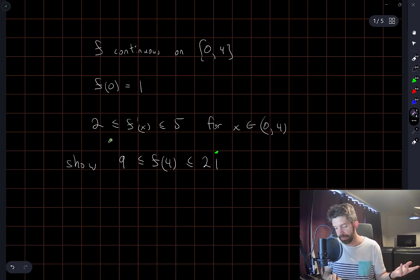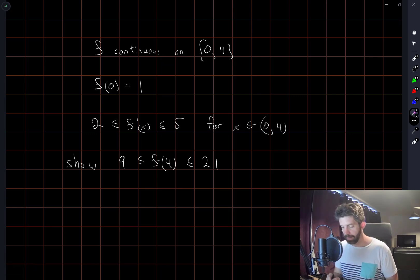Similarly, if f' equals its minimum value for all values of x, we start at 1 and it grows at a rate of 2 over an interval of length 4. 2 × 4 = 8, 8 + 1 gives us 9.